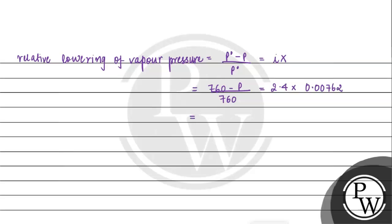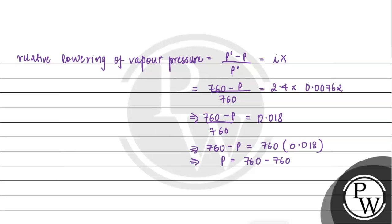Solving for P: 760 − P = 760 × 0.018, so P = 760 − 13.7, giving the final answer for the vapor pressure of the solution. I hope you understood it well. Best of luck.